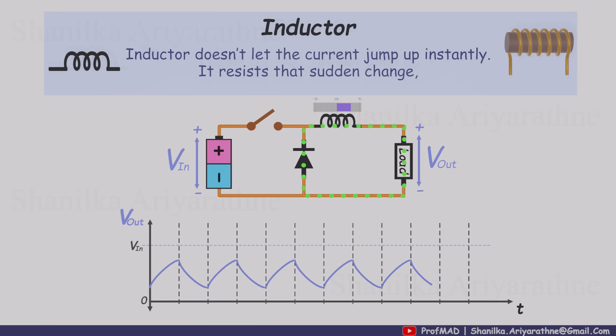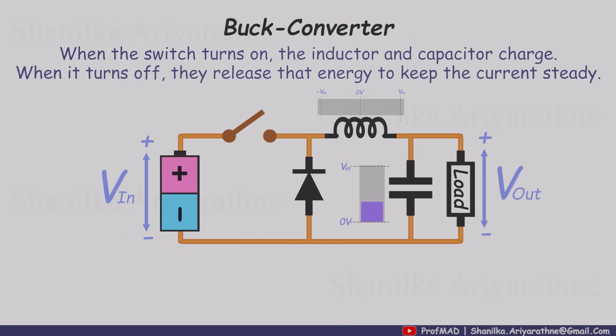Now that you've seen how a capacitor and an inductor each smooth the square wave a little on their own, here's the real question. What happens if we combine them like this? When the switch turns on, both the inductor and the capacitor begin storing energy, and current flows through the load.